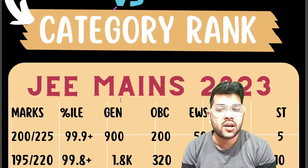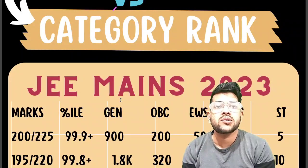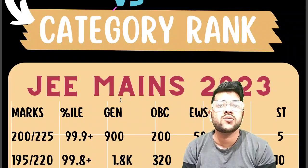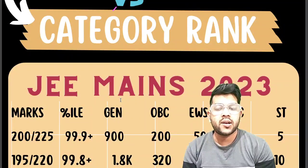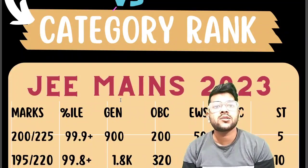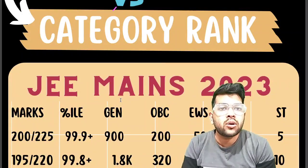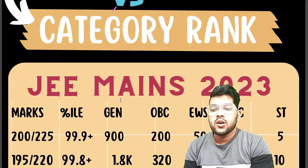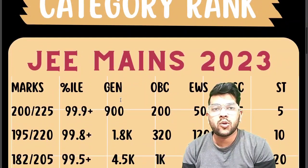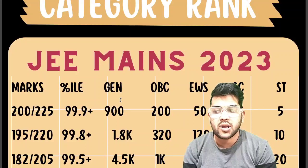If you are from SC category, you will get two ranks: one is the CRL (Common Rank List), which is the general rank, and the other is the category rank — that is your rank among your own category. So hope you get the point.